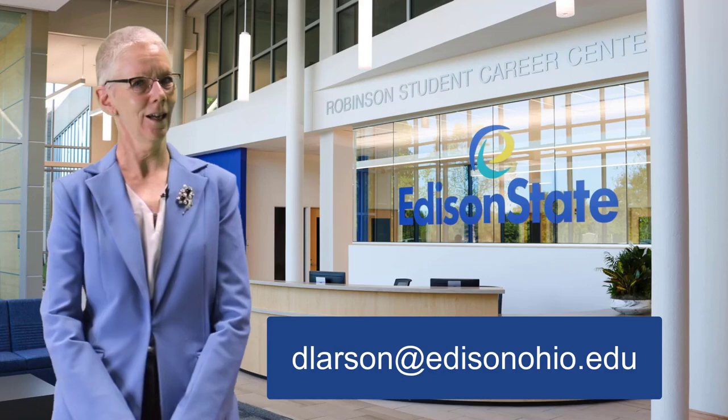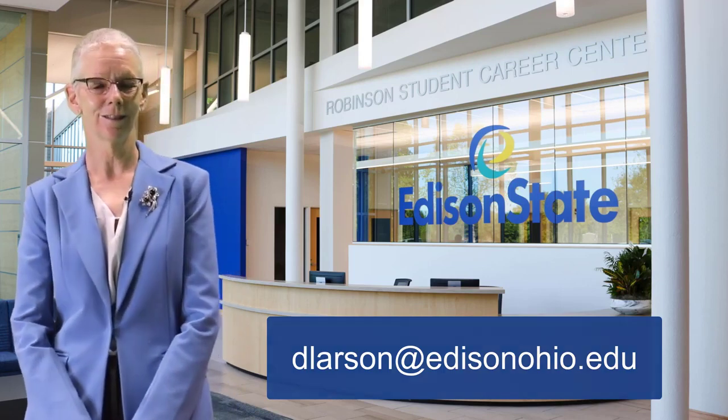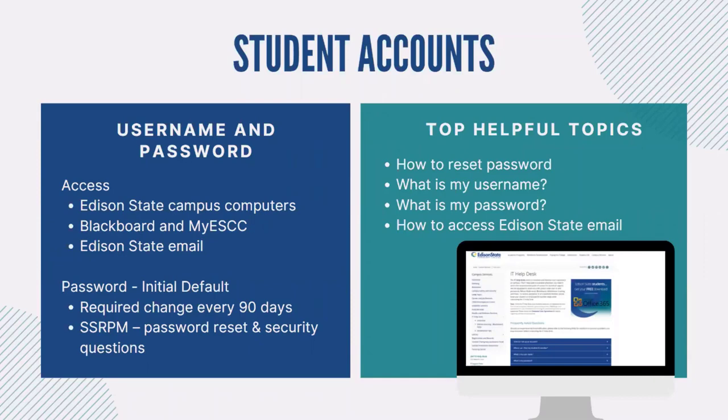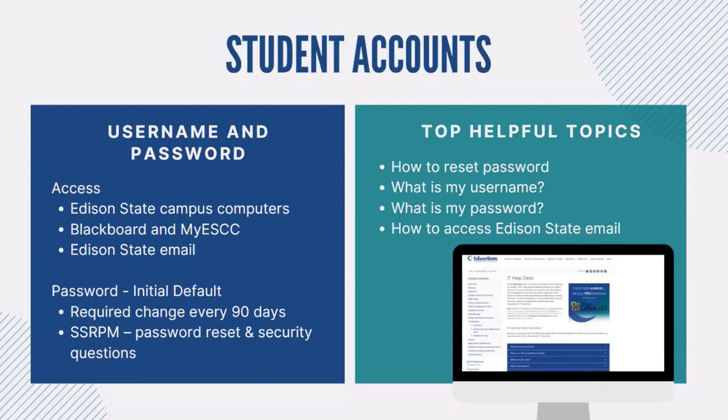You can reach Dr. Larson at dlarson@edisonohio.edu. Now let's dive into your student accounts. Your student accounts are your gateway to all of your resources, including Edison State's campus computers, Blackboard, MyESCC, and your Edison State email. It will take approximately 48 to 72 hours after you register for classes for your student accounts to be generated. Initially you have a default password that is required to be changed every 90 days. We encourage you to enroll in SSRPM — Self-Service Reset Password Management — to change your default password.